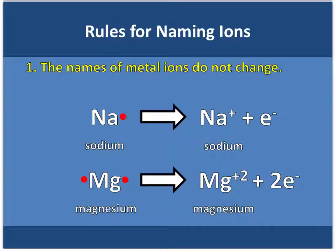So let's look at the rules for naming ions. The name of the metal ions does not change when they lose electrons. Here we have sodium — we start with sodium with one valence electron, and we end up with the sodium ion plus an electron. That tells us the electron was lost, hence sodium has a positive charge. The overall charge is 0, and when we add our positive and negative charges on the right side, it's also equal to 0. They're balanced — equal on both sides.